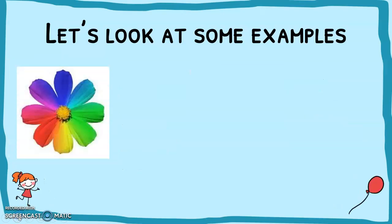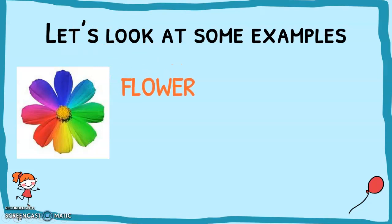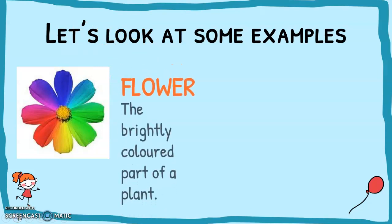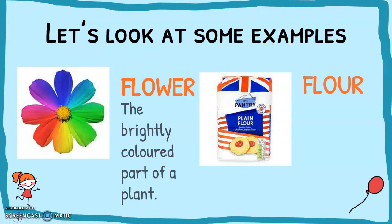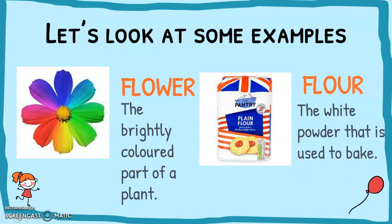Another example is flour. The flower is the brightly coloured part of a plant, but we can also have the flour we use to bake with. They have two different spellings — one with a W and one with a U. The way I remember it is the W is like the petals on the flower.